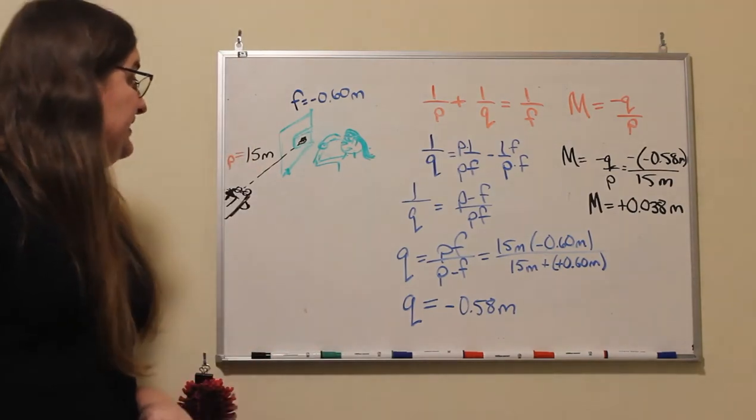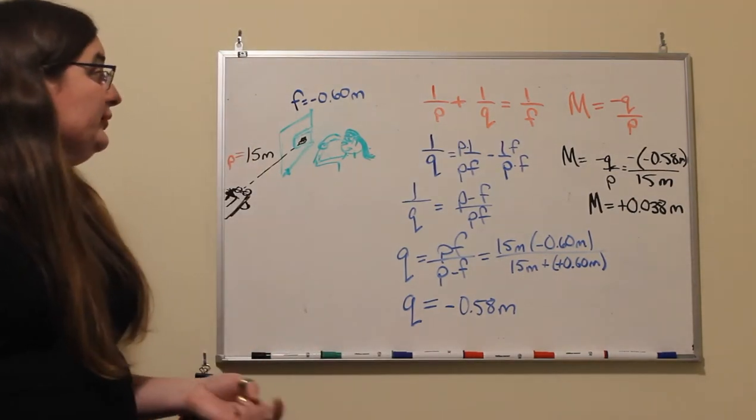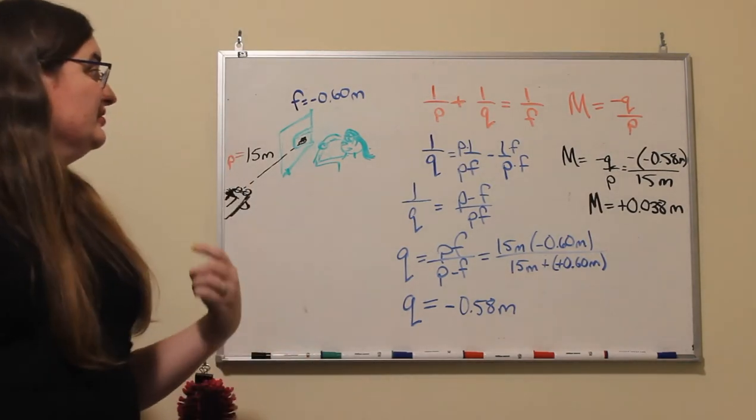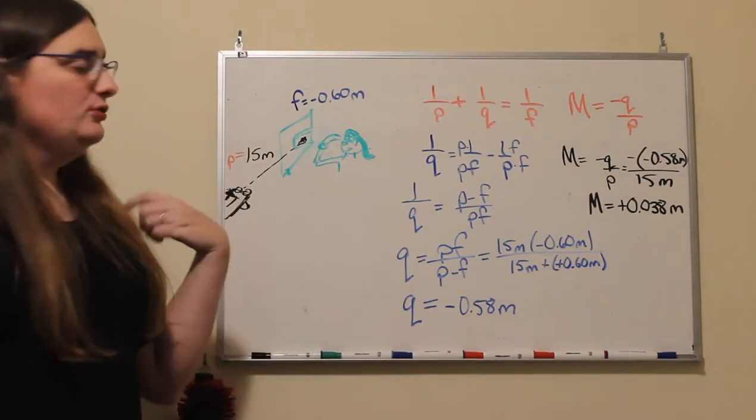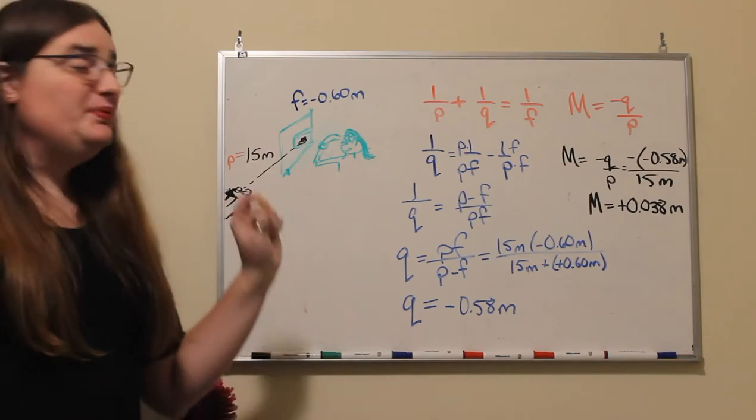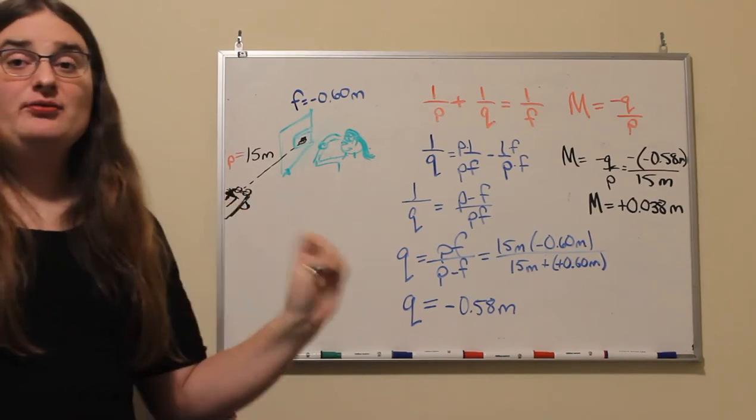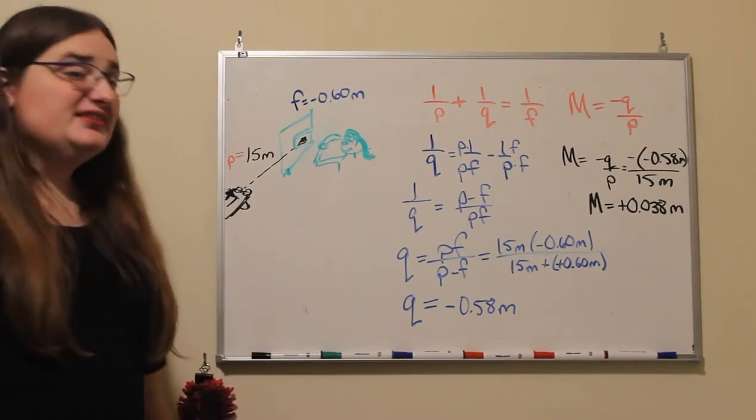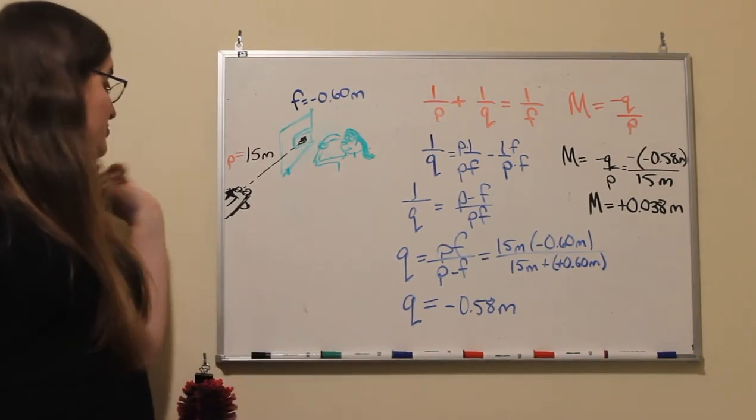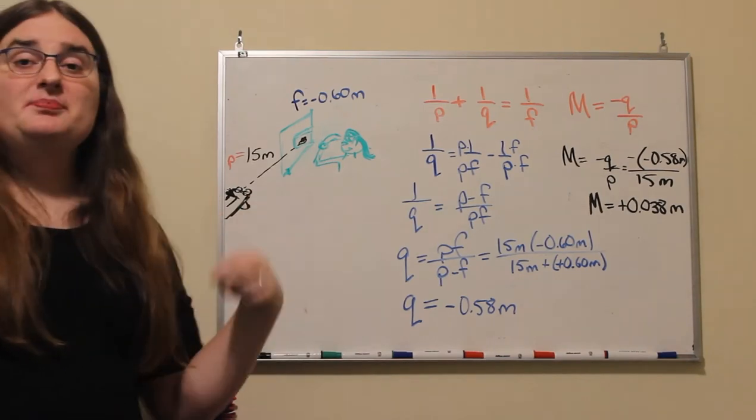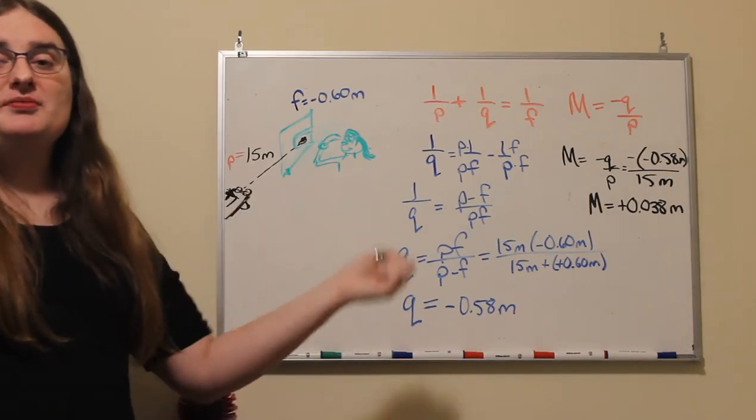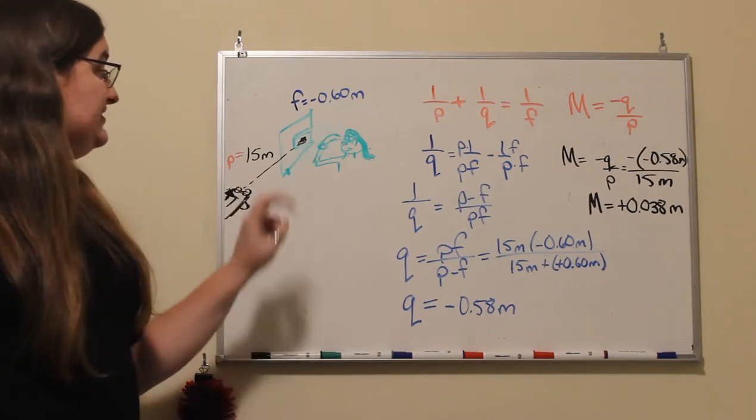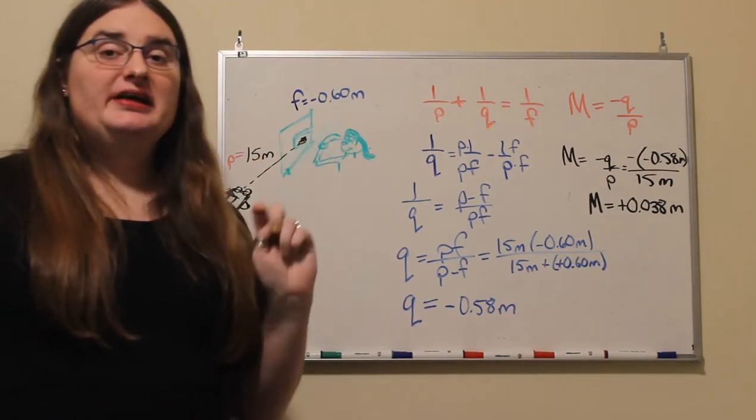So say that the side view mirror we're looking at has a focal length of negative 0.60 meters. And it's negative because it can't create real images, it's a diverging mirror, it's convex. And let's say that we have an object here, some sort of car, that happens to be 15 meters away from the mirror. So where is that image going to appear in the mirror?